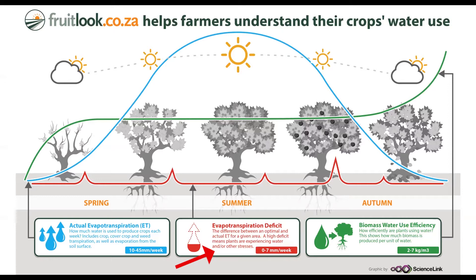Evapotranspiration deficit is the difference between the optimal and actual evapotranspiration for a given area and is a representation of plant water stress. Where the actual evapotranspiration is the real crop water use on a certain day, the optimal evapotranspiration represents the amount of water that could be evaporated and transpired under actual meteorological conditions and ample water supply. The difference is the absolute evapotranspiration deficit and reflects the crop's shortfall in what it can potentially achieve. It is also expressed in millimetres per week.